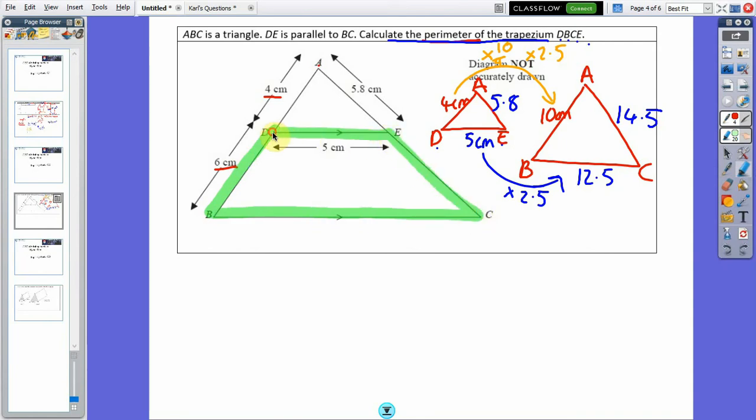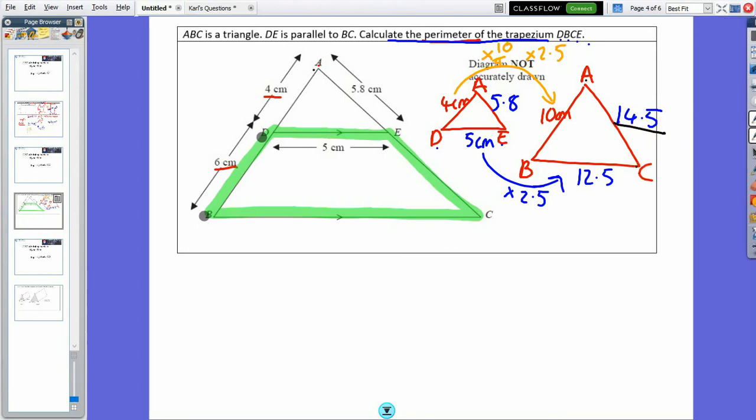I'm going to fill in all the numbers, all the values, all the lengths that I know from this. I know this is 6 centimeters from D to B. I know that A to C is 14.5, A to E is 5.8.